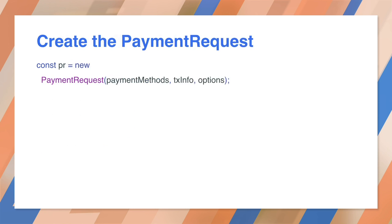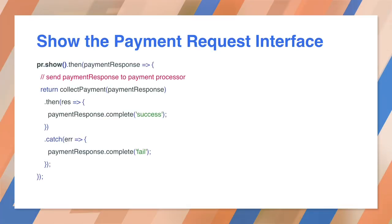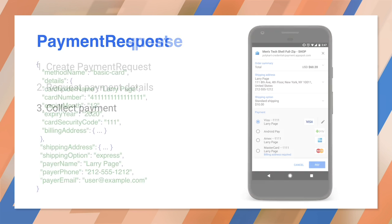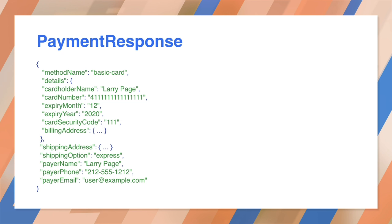Take the data structures you just created and pass them to the payment request constructor. This should happen in response to a button tap or other user initiated action. Now so far, the screen hasn't changed — we need to trigger the UI. Take the payment request and call the show method. This returns a promise and opens the user interface. Notice there's a big block of code after this — we still have a couple of steps until we're done. The UI shows the details of the purchase and collects payment information. When the user approves, the promise resolves with a payment response object. The payment response object contains everything needed to submit a payment.